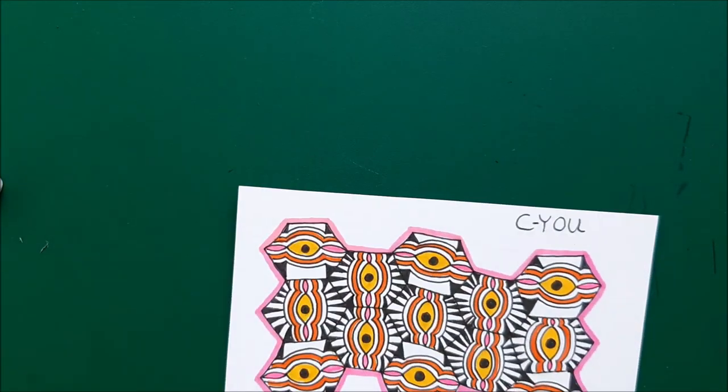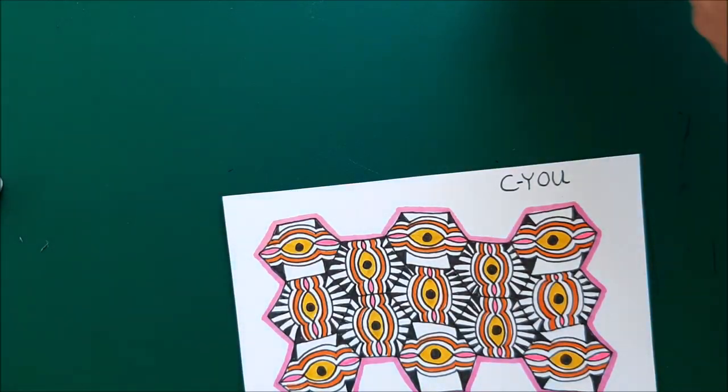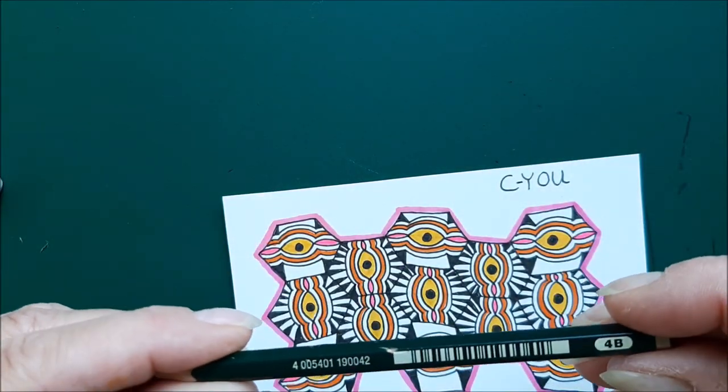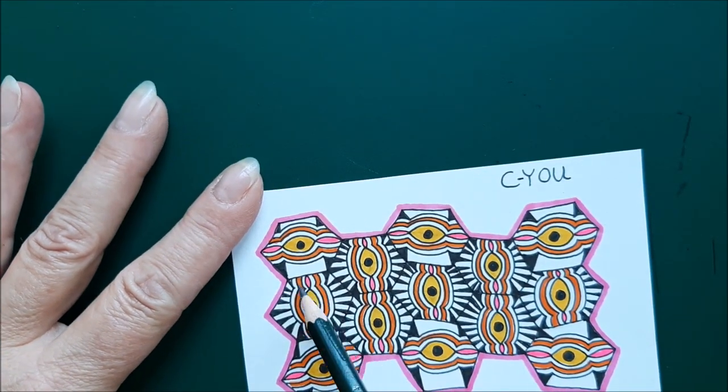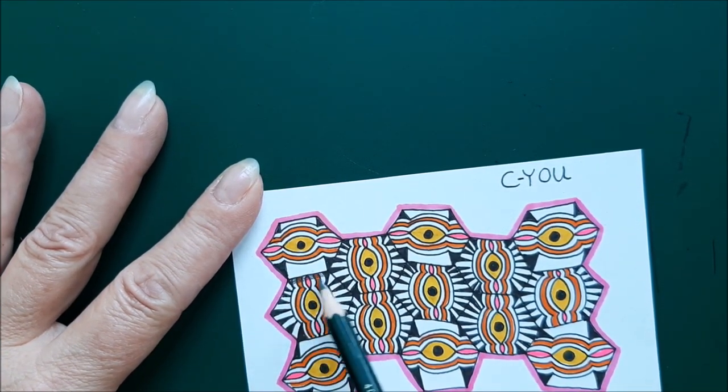Now the only thing I want to do is give it some shading. I'm using a 4B pencil which is quite soft. I'm just going over the colors.